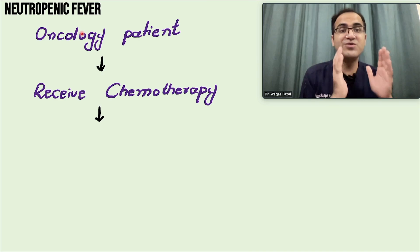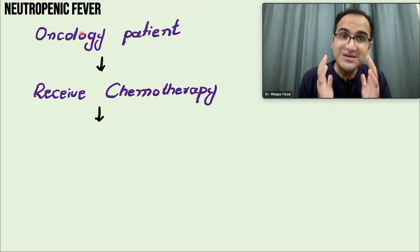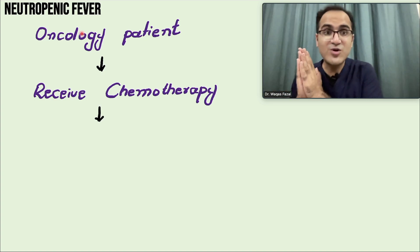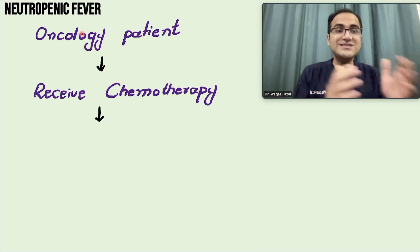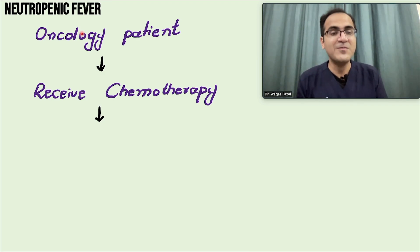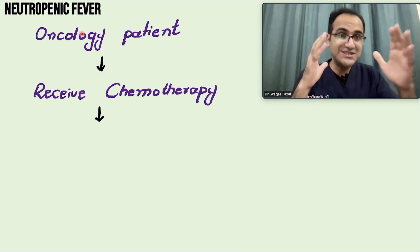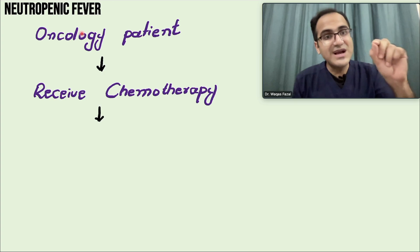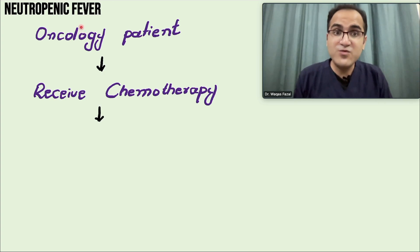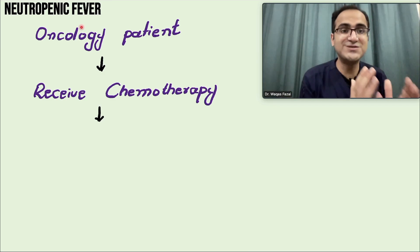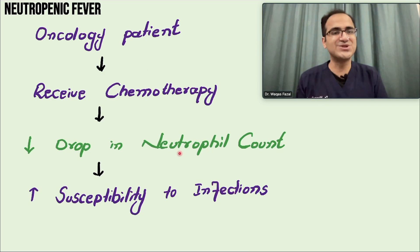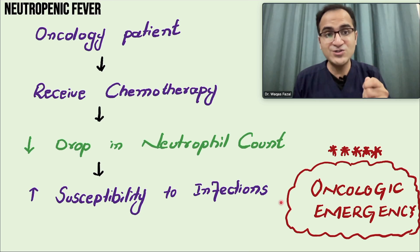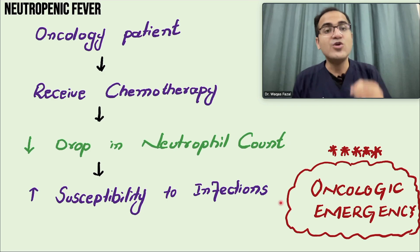Usually these patients present to the emergency department running a fever. On history, they report having some kind of malignancy for which they were started on chemotherapy, and they recently received that chemotherapy. On CBC with differentials, the neutrophil count will be less than 500. Their immunity is compromised, they develop infections and fever. This drop in neutrophil count with increased susceptibility to infections is the classical presentation of neutropenic fever.